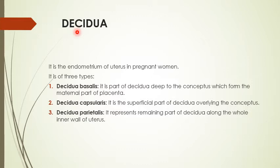The whole uterine endometrium undergoes proliferation, but proliferation is more marked on the posterior wall and fundus of the uterus in the midline. This thicker endometrium at the fundus and posterior wall is given the name decidua if it persists under the corpus luteum, which maintains this placenta or maintains its life.